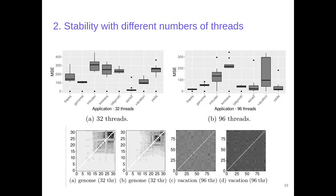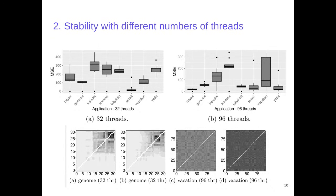For the second experiment, we ran the application using the same default parameters as the first experiment, but also using 32 and 64 threads. Some applications, like Genome, present the same communication behavior even when changing the number of threads. However, using 64 threads, the highest MSE difference belongs to Vacation. But as in the previous experiment, when we compare the communication matrices of two different executions, we see the same behavior as SSCA2 — it is only a difference in the total amount of communication, but with an all-to-all communication pattern.